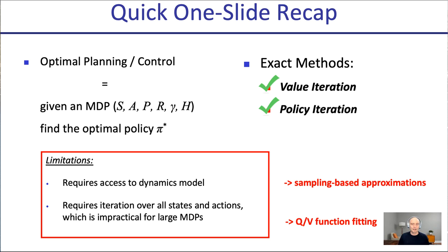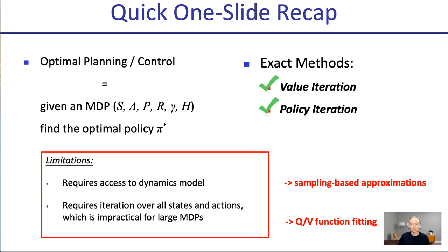The second limitation of the exact approaches is that they have a loop over all states and actions. For any reasonably interesting situation, the number of states — and often actions — will be really, really large. So we'll look at Q-function and value function fitting, and also policy fitting in later lectures, where instead of a table with the value for each state, we'll have a function — often a neural network — that takes in a state and outputs the corresponding value or action.